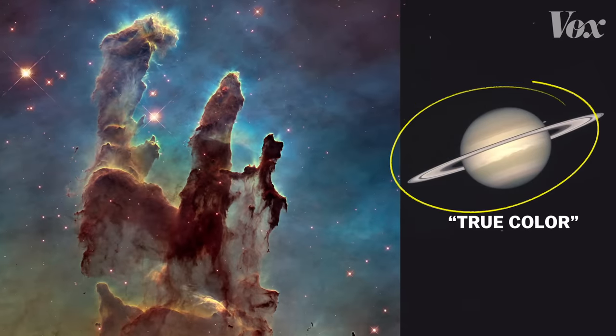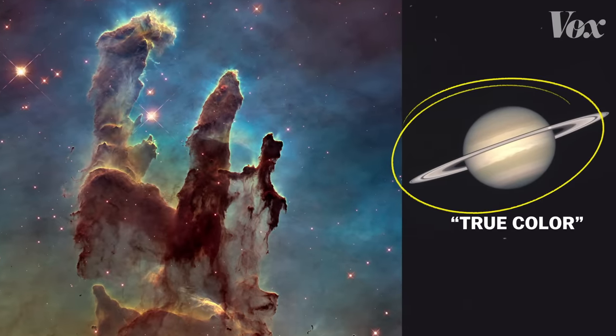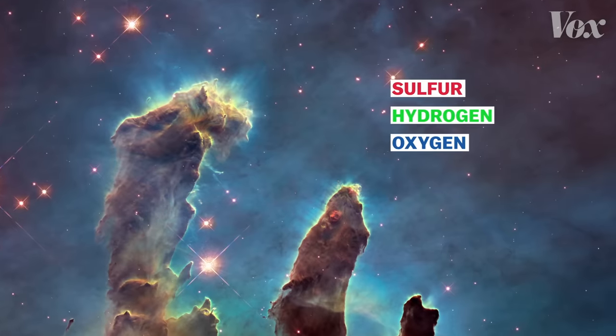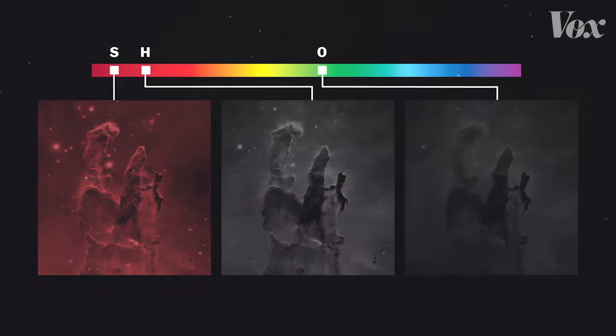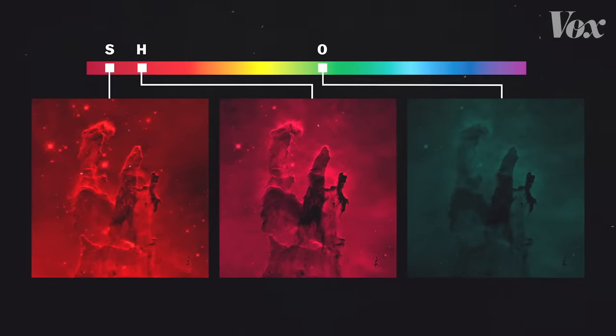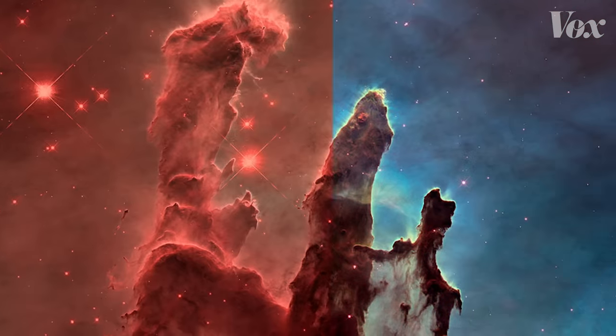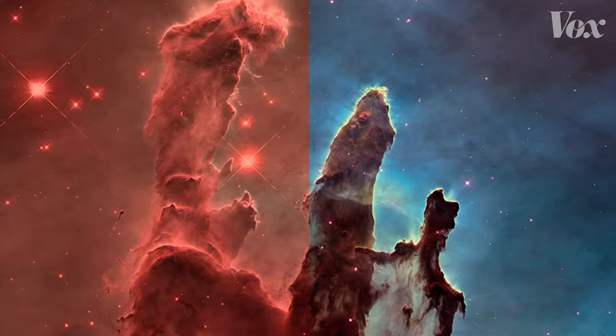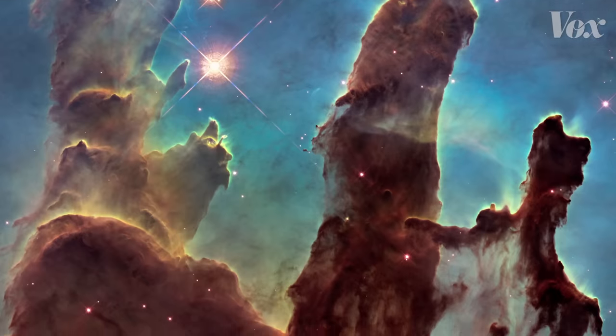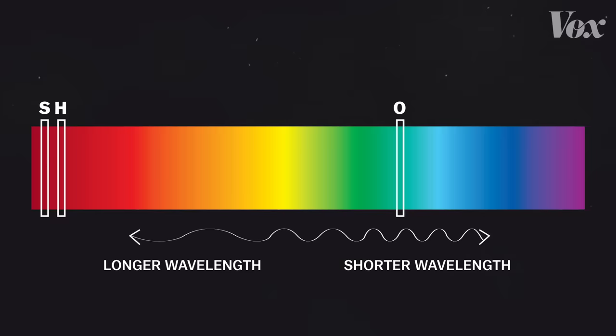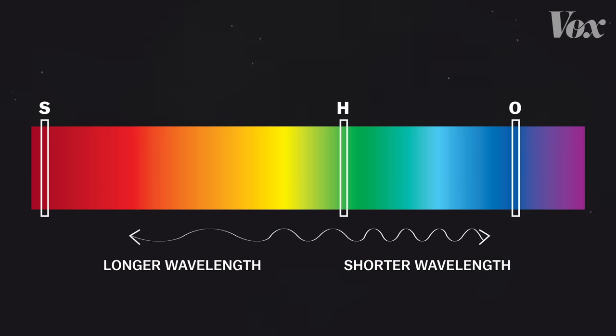But this isn't a true color image like the one of Saturn from before — it's more of a colorized map. Hydrogen and sulfur are both seen naturally in red light, and oxygen is more blue. But coloring these gases as we'd actually see them would produce red, red, and cyan, and the Pillars of Creation would look more like this — not as useful for visual analysis. In order to get a full color image and visually separate the sulfur from the hydrogen, scientists assign the elements to red, green, and blue according to their place in the chromatic order.